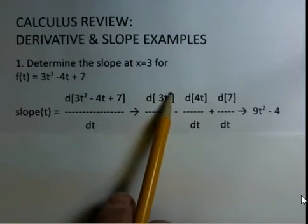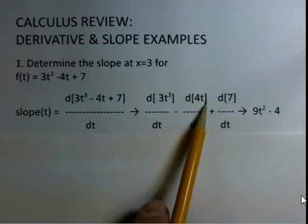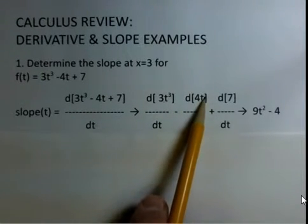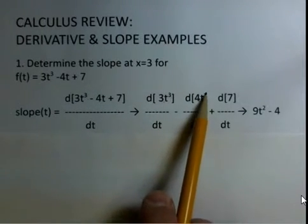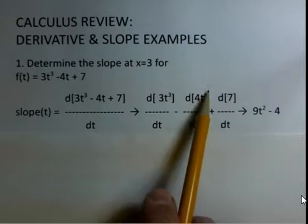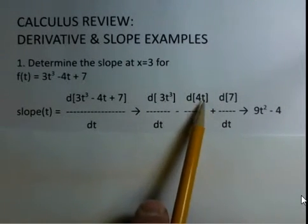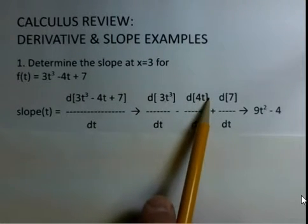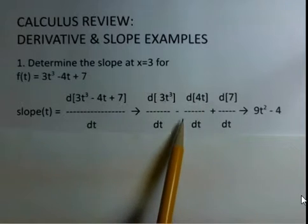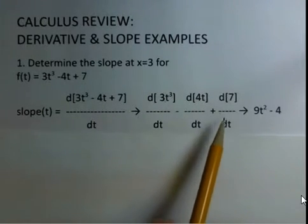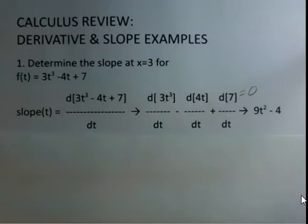For the derivative of 4t, there's a 1 on the power for 4t that mathematicians by convention do not write in. The 1 comes down as a multiplier, giving us 4, then we get t⁰. t⁰ is a 1 factor, so we get minus 4. The derivative of a constant equals 0.